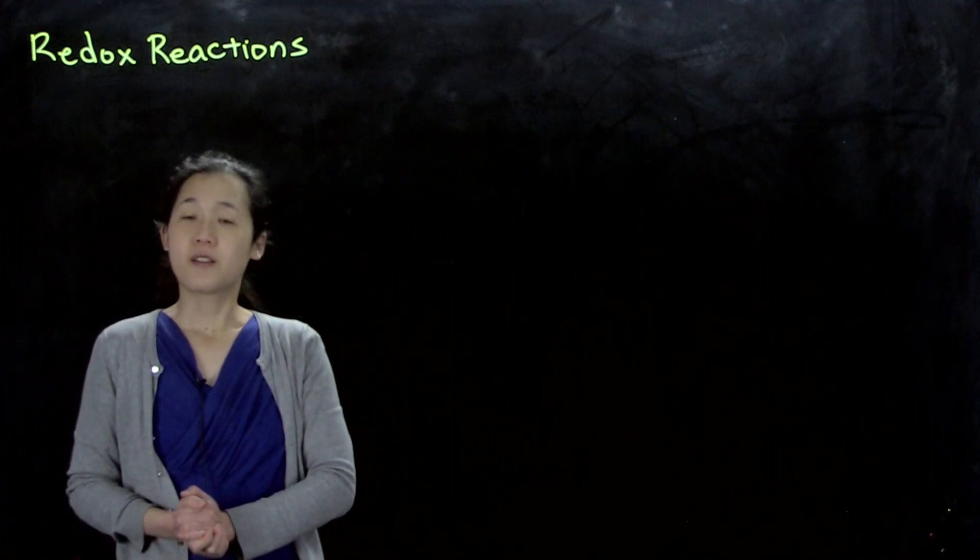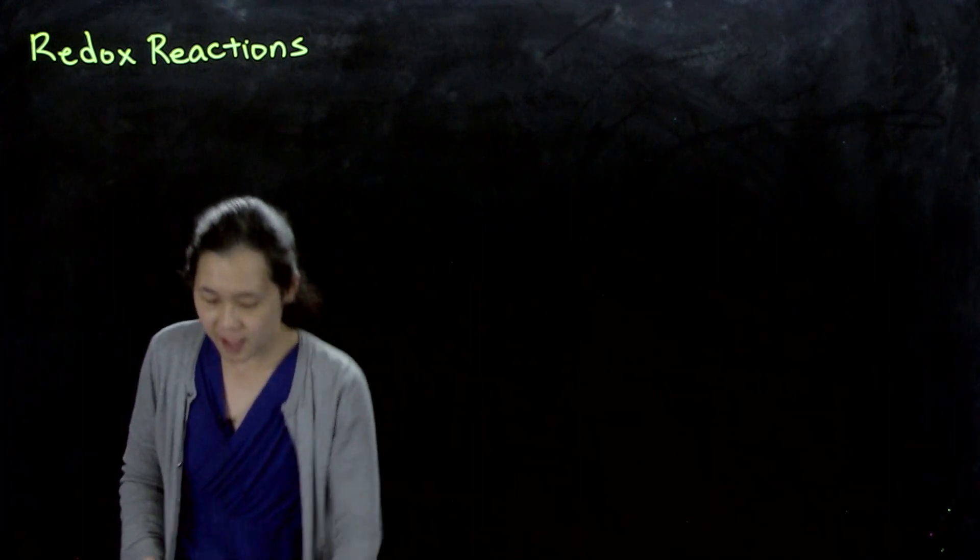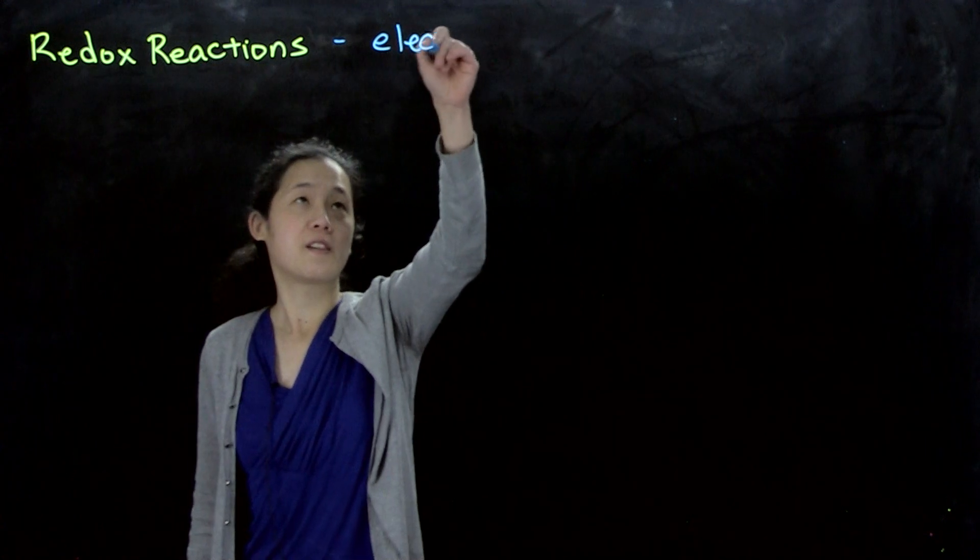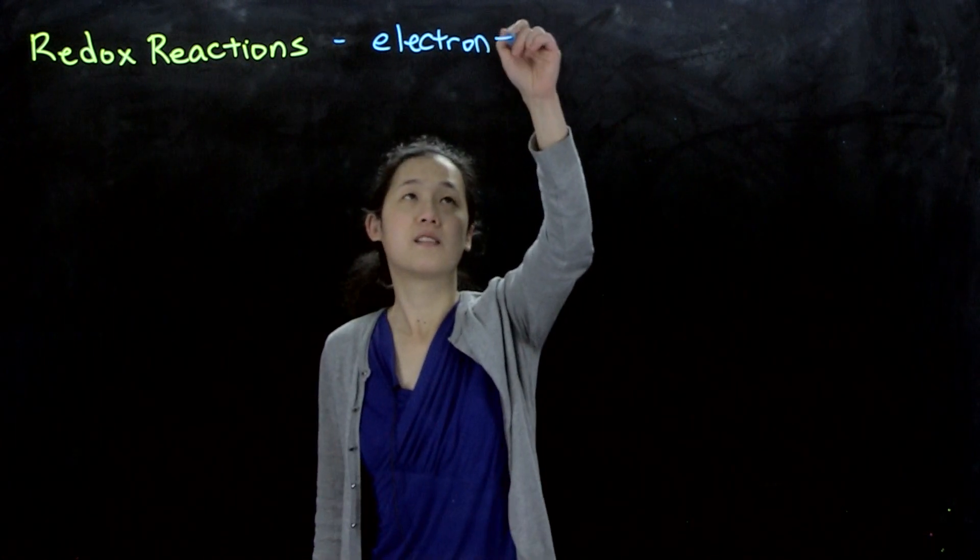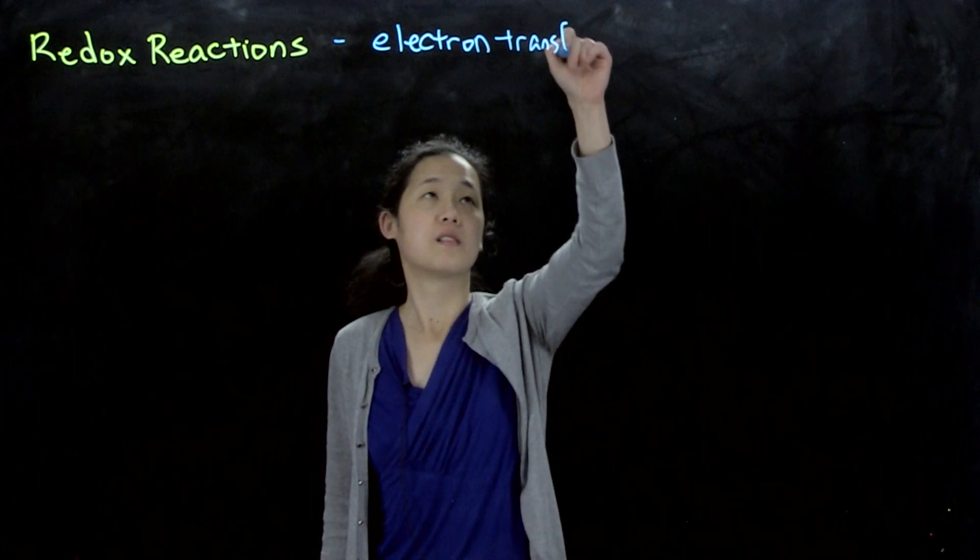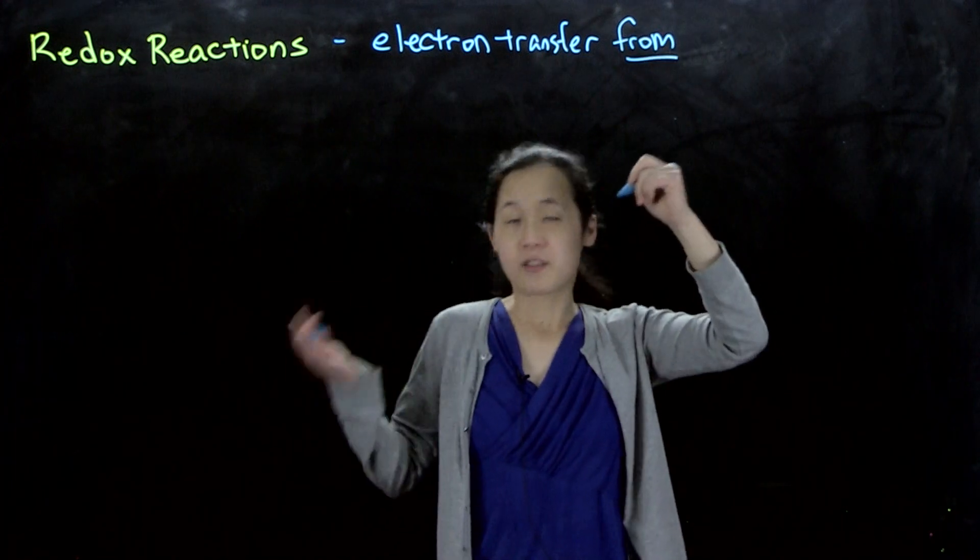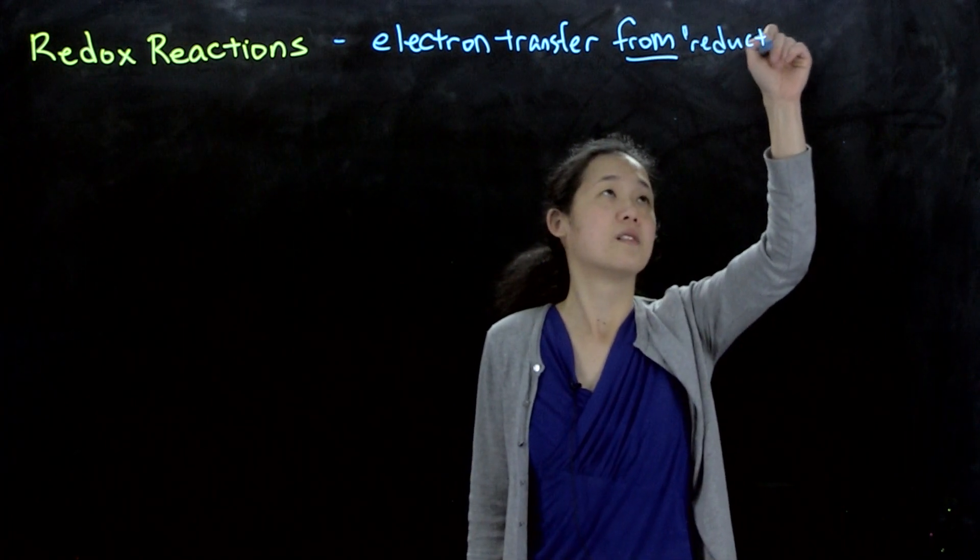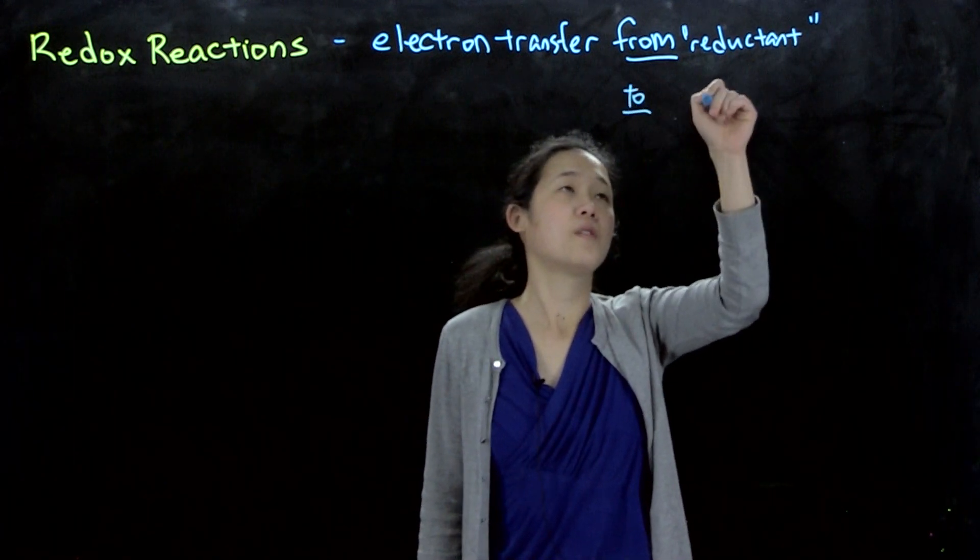Okay, we're now in our new unit. Let's talk about electrochemistry and redox reactions. Redox reactions are when we have electron transfer between two different compounds. The one that's giving the electron is called the reductant, to the oxidant.